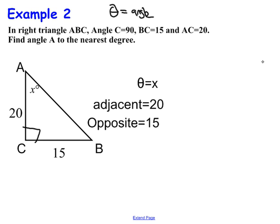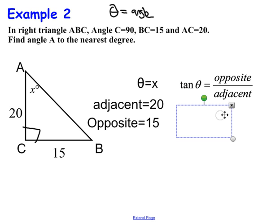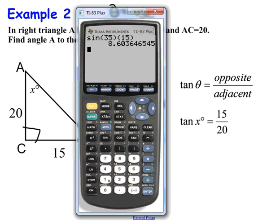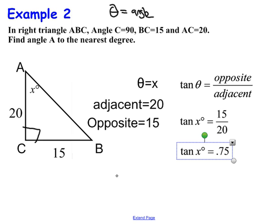So let's write the formula. So it's the tan of theta is equal to opposite over adjacent. So now you substitute. The tan of X is equal to 15 over 20. Well, 15 over 20, this is something that can be simplified. You don't have to cross multiply right away. So 15 over 20 is 0.75. So the tan of X is equal to 0.75.